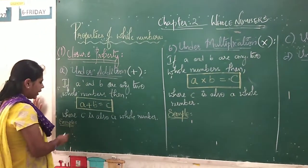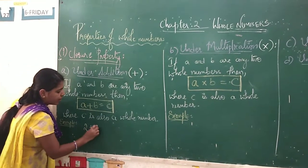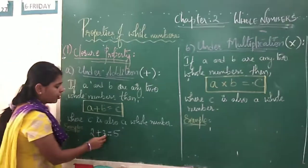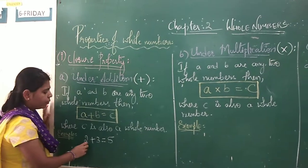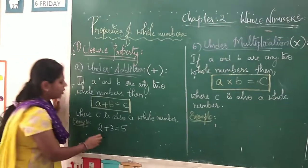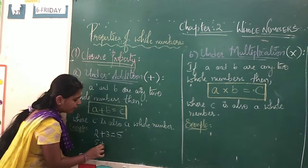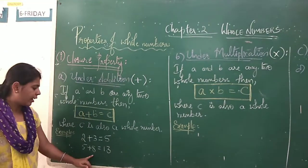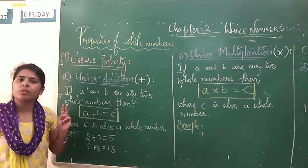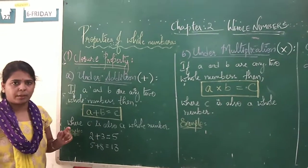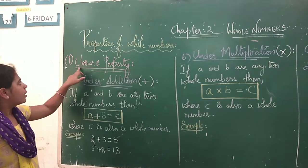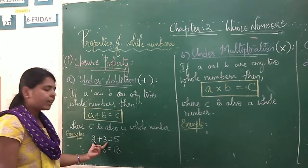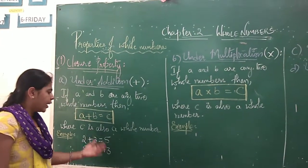I will take an example for closure property. 2 plus 3 equals 5, right? Either you take it as 2 plus 3 or 3 plus 2, you will get 5. 2, 3, and 5 are whole numbers. The same way, one more example: 5 plus 8 equals 13. 5 and 8 are whole numbers and when you add them, you get a whole number.